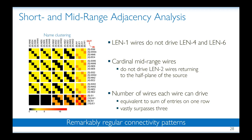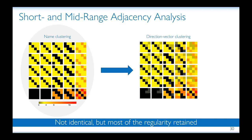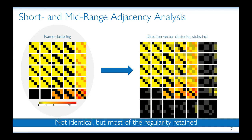Here we have the full adjacency heat map produced by Netcracker. First, we notice remarkably regular connectivity patterns. We can also see that length-one wires do not drive wires of length two which return to the half plane of the source. Perhaps most interesting is the fact that the number of wires that each wire can drive — easy to compute here as the sum of the entries in one row — vastly surpasses three, and three is the value commonly assumed in academia. These results were all produced using name clustering. If we instruct Netcracker to use direction vector clustering, then the real connectivity patterns will emerge. They are not necessarily identical, but most of the regularity is retained, and part of it is lost in providing the connections to secondary destinations.